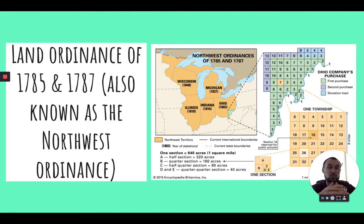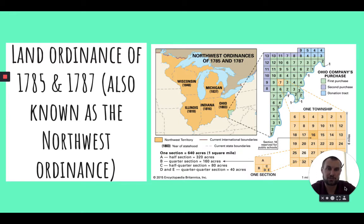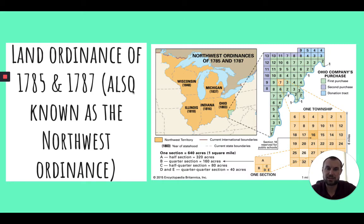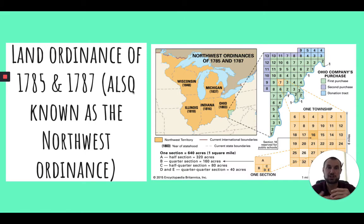The Northwest Ordinance also established that you had to have 60,000 people to become a state. You were a territory under federal jurisdiction until you became a state with equal status to all others — no state would be better than another. This framework would be used throughout westward expansion. Importantly, the Northwest Ordinance forbade slavery in this territory, which is crucial because it gave the North — states without slavery — more representation, which, as we get into the Civil War, will be all about equal representation.